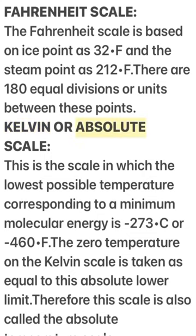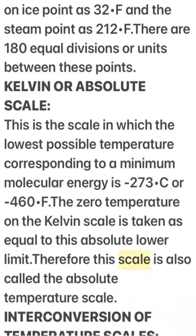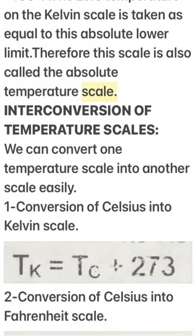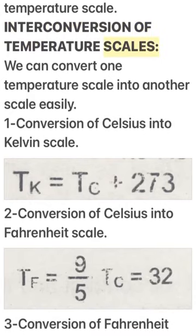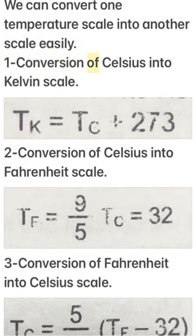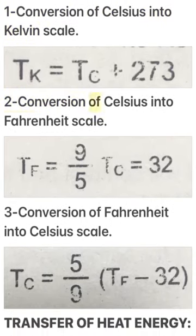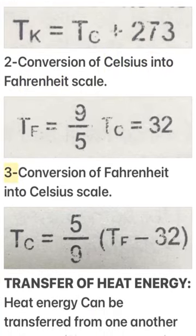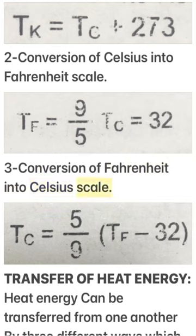3) Kelvin or absolute scale: This is the scale in which the lowest possible temperature, corresponding to a minimum molecular energy, is −273°C or −460°F. The zero temperature on the Kelvin scale is taken as equal to this absolute lower limit; therefore, this scale is also called the absolute temperature scale. Interconversion of temperature scales: We can convert one temperature scale into another scale easily — conversion of Celsius to Kelvin, Celsius to Fahrenheit, and Fahrenheit to Celsius.